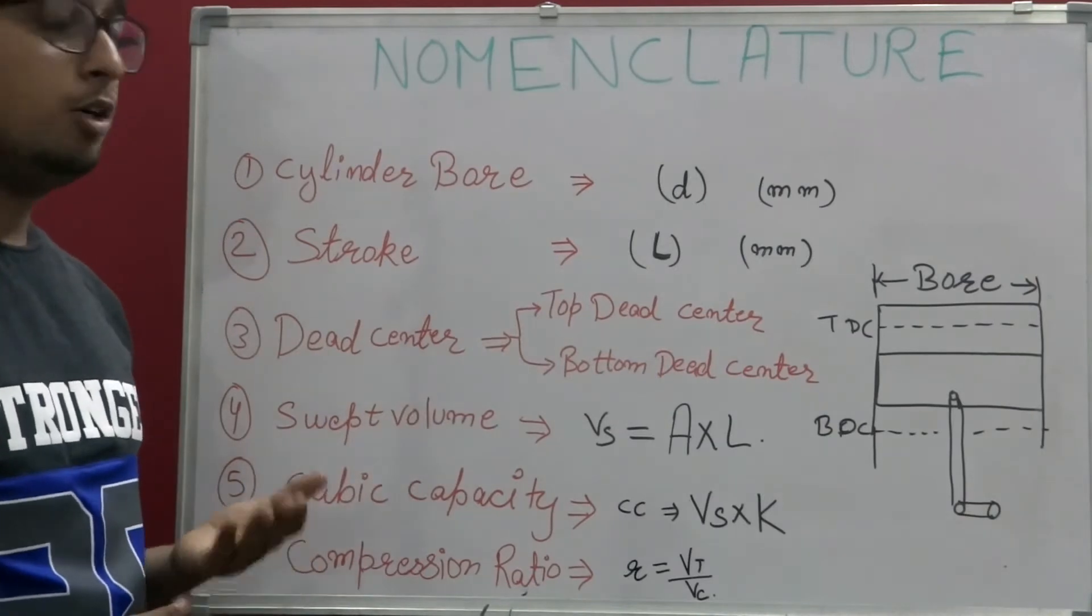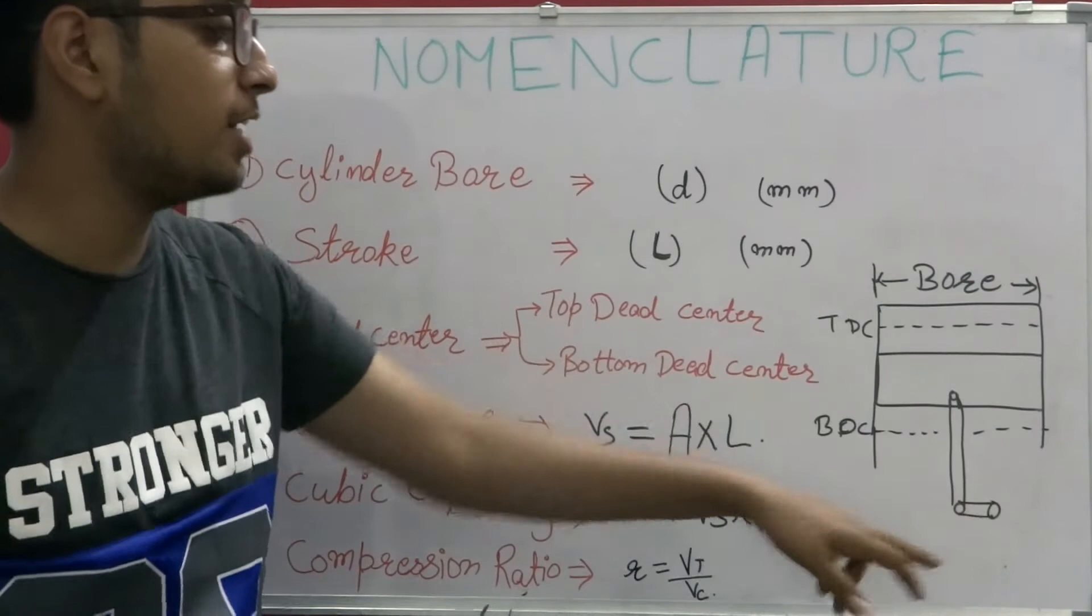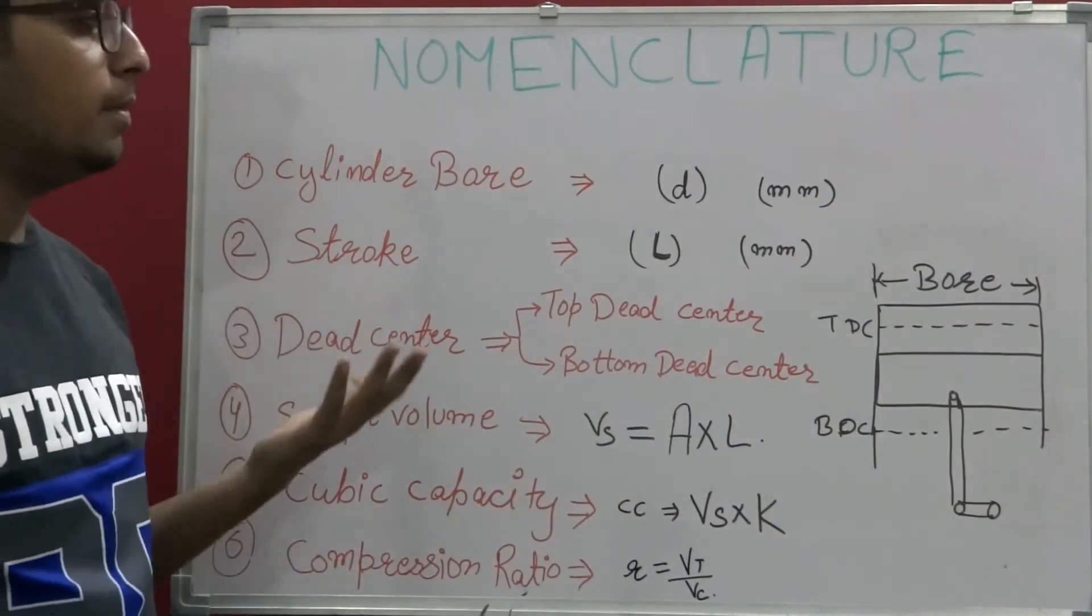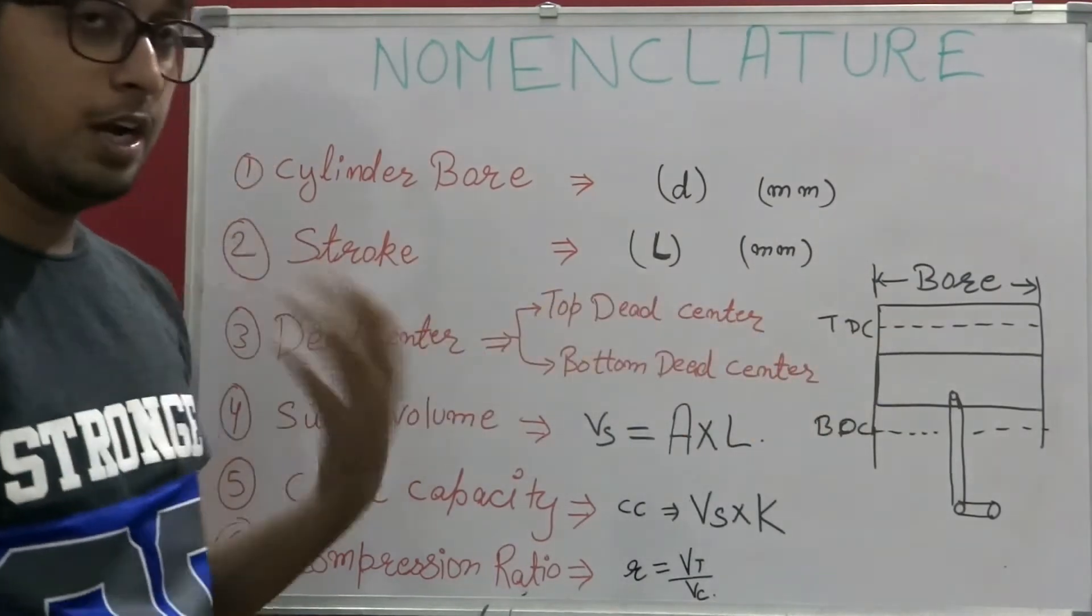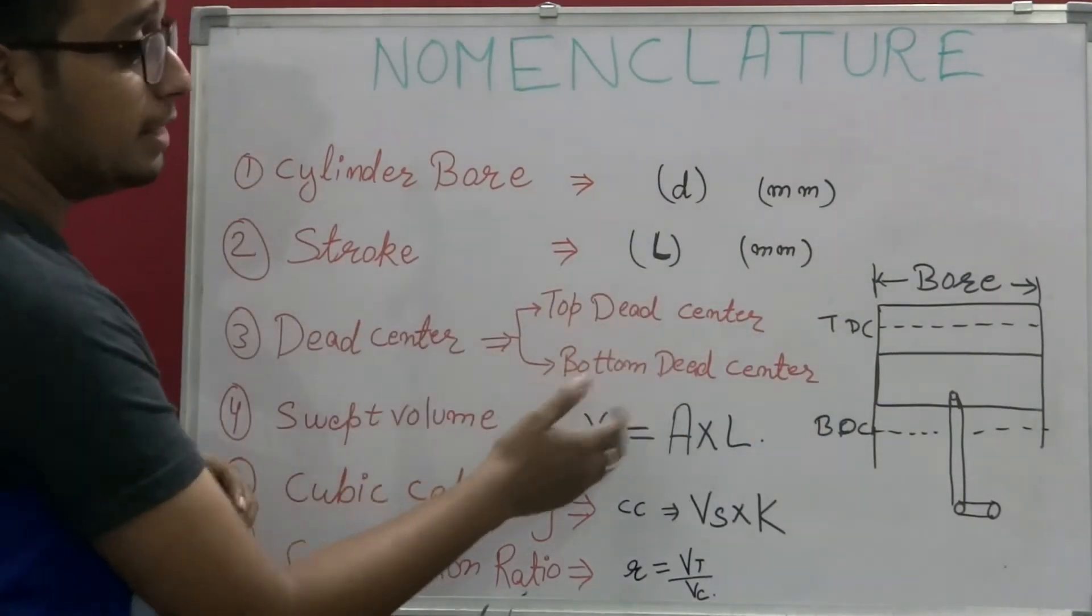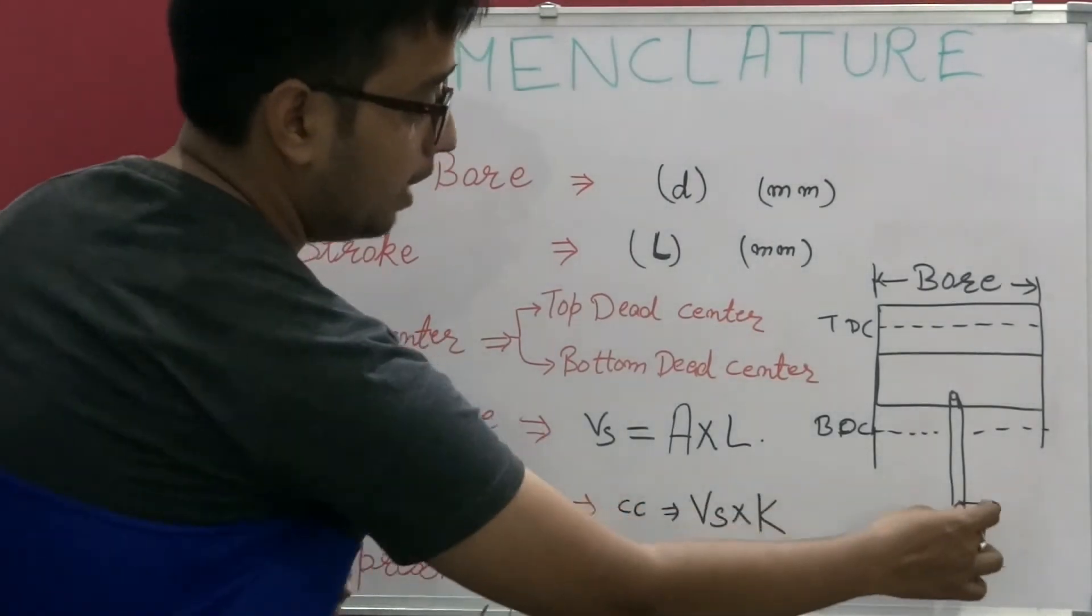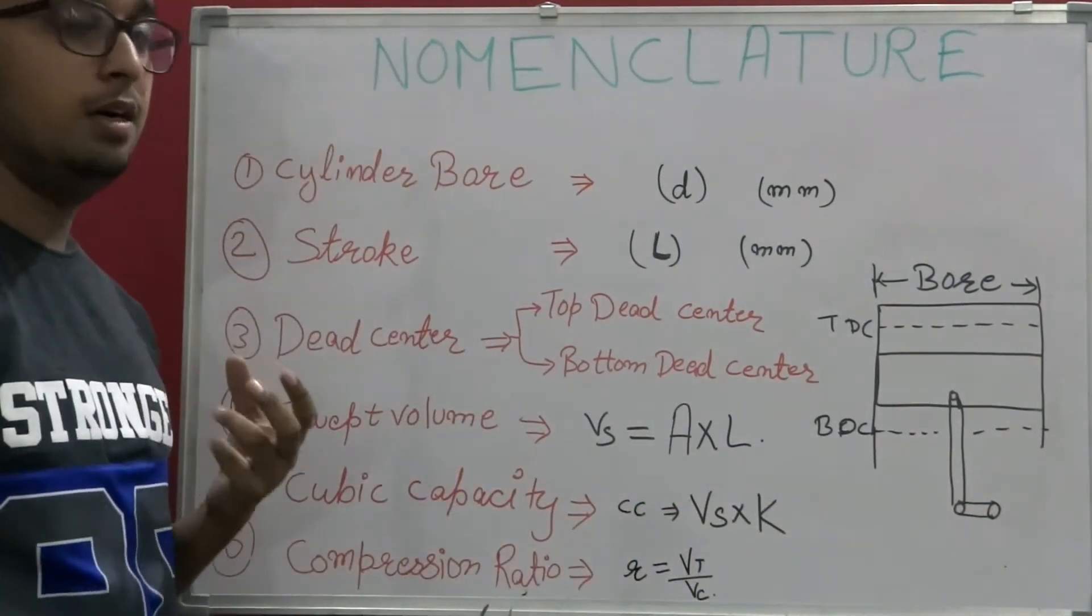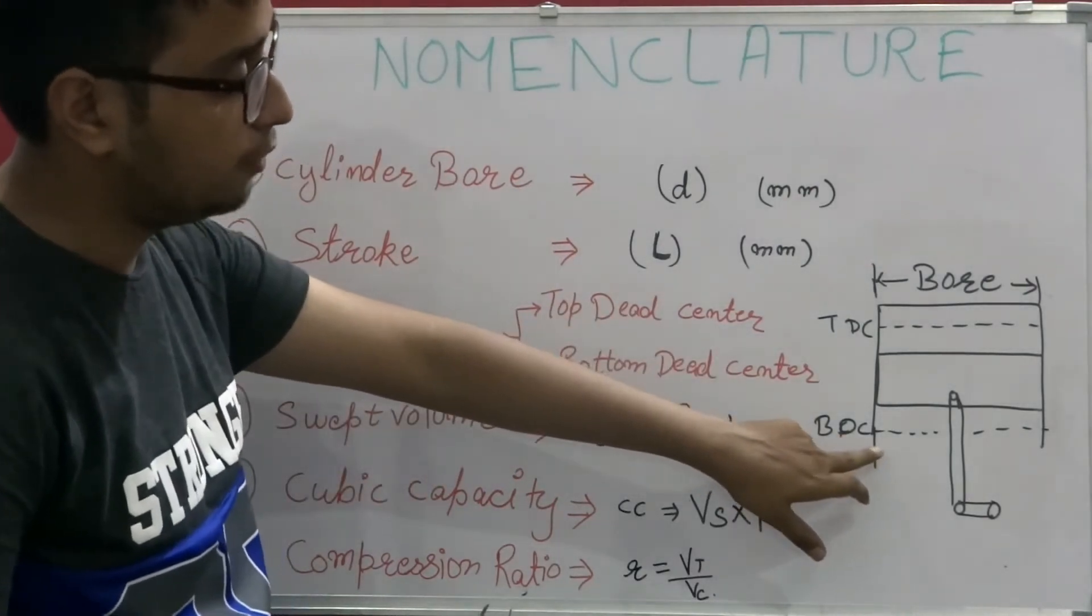Top dead center is the maximum distance from the crankshaft or the maximum height a piston can attain when it is moving up. Bottom dead center is the minimum distance from the crankshaft and it is the distance when the piston moves downward maximally.